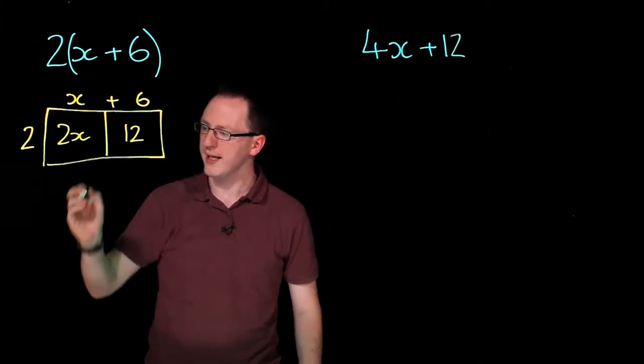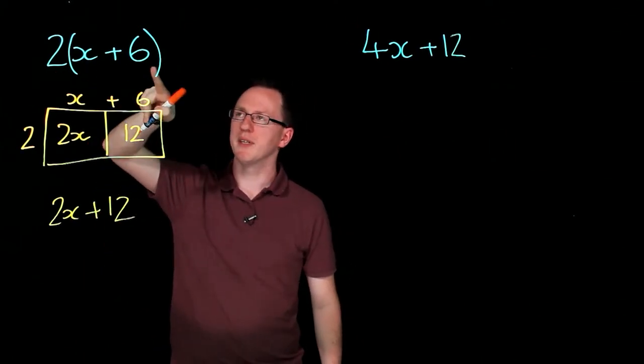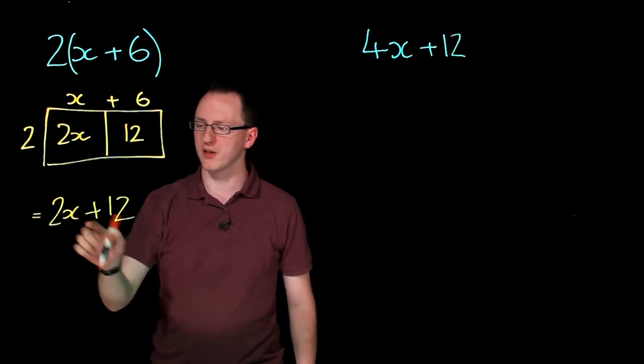So the total area is 2x plus 12. So 2 brackets x plus 6 expanded is 2x plus 12.